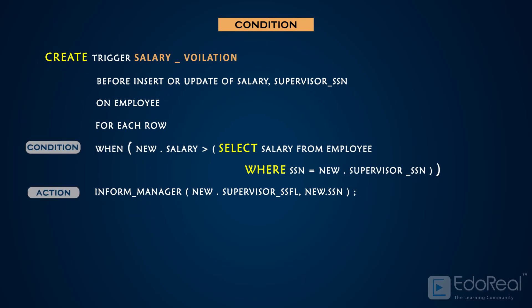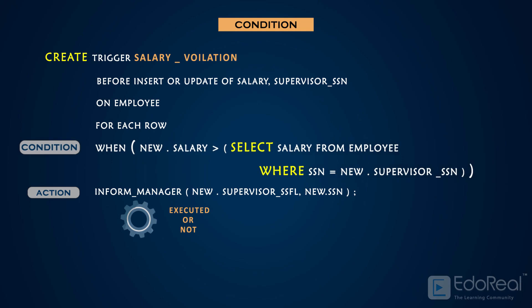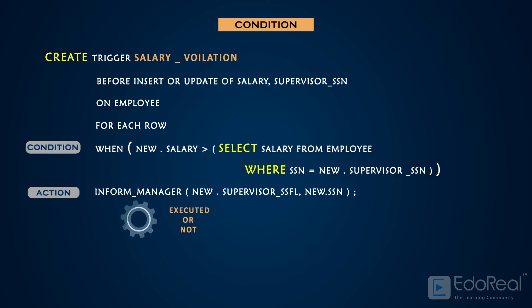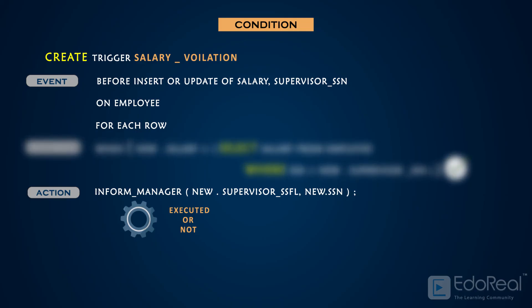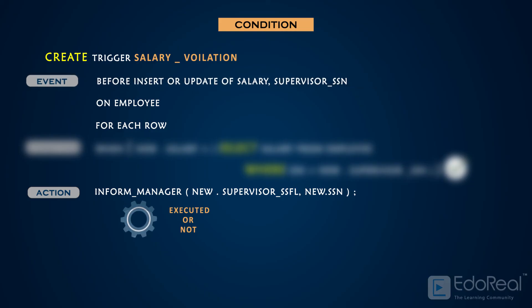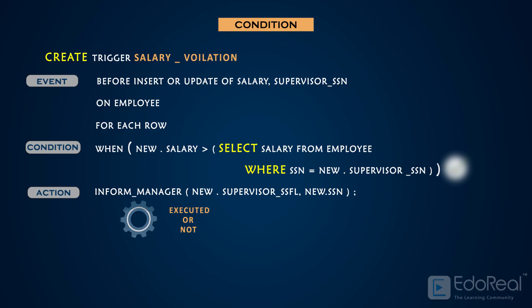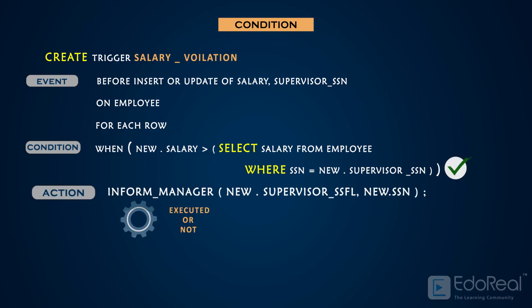The condition determines whether the rule action should be executed or not. The condition is specified in the WHEN clause of the trigger. Once the triggering event has occurred, the condition will be evaluated. If no condition is specified, the rule action will be executed after the triggering event occurs. If a condition is specified, then the condition is first evaluated, and if it is true, the rule action will be executed.